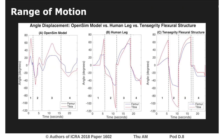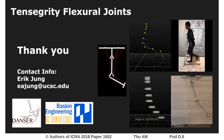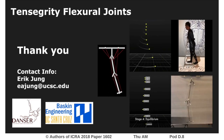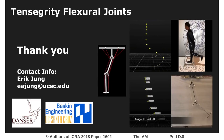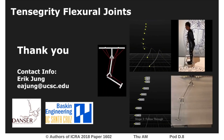This plot gives an accurate depiction of the similarities between the range of motion for the OpenSim model, the human leg, and the tensegrity flexural structure. Thank you for listening to this spotlight presentation. If you have any questions or would like to learn more, please contact me at the email listed.